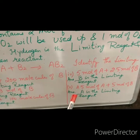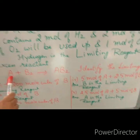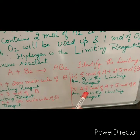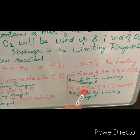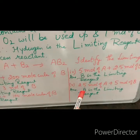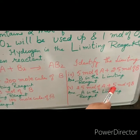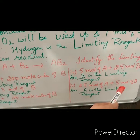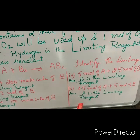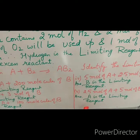Now the last condition: when we have 2.5 mol of A and 5 mol of B₂. 2.5 mol of A will react with 2.5 mol of B₂, and thus B₂ is the excess reagent and A is the limiting reagent.